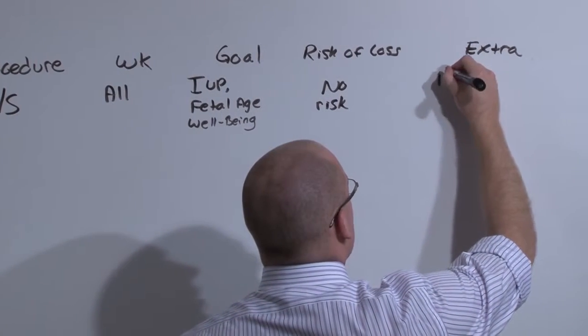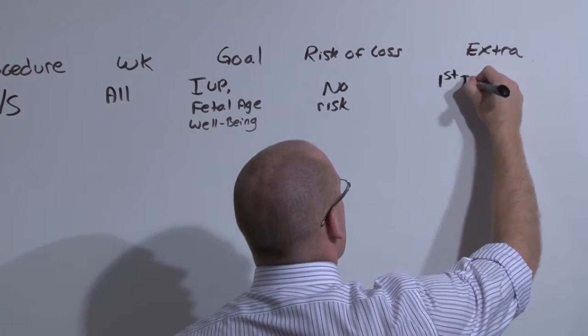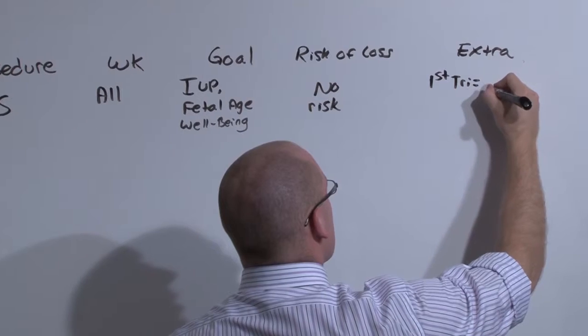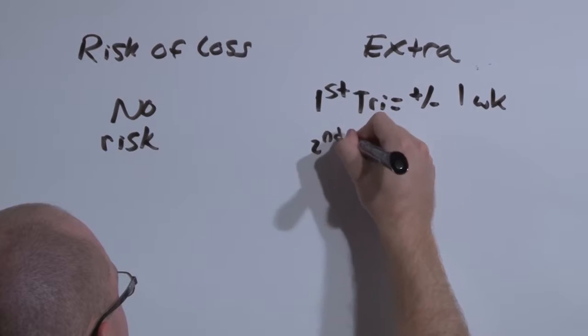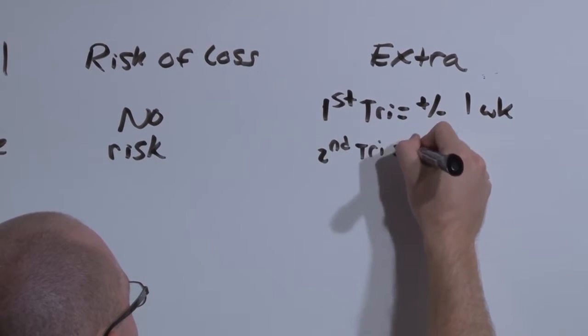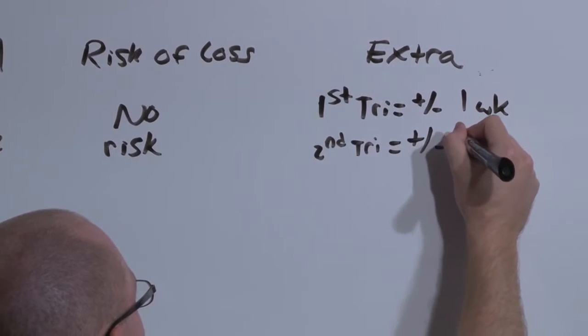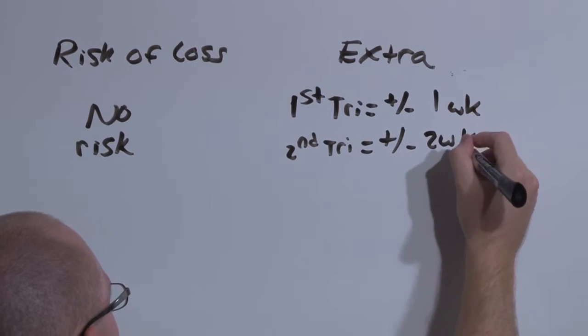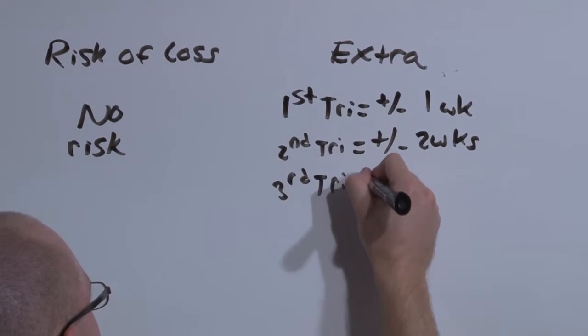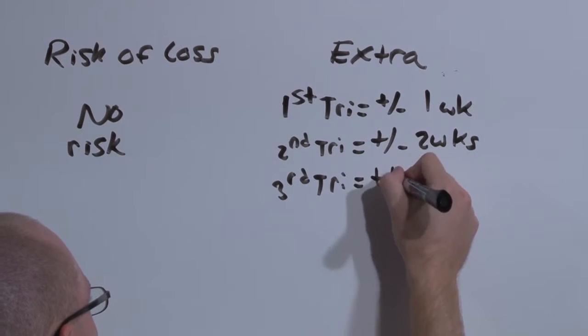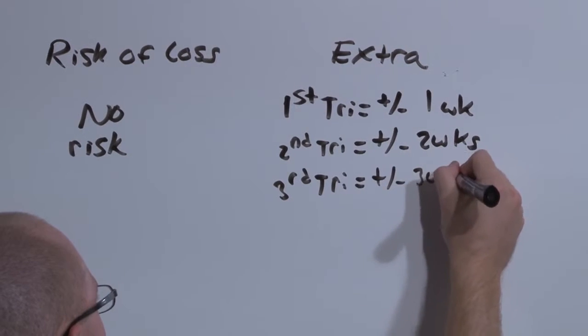Such that if you attempt to identify fetal age in the first trimester, you'll have gestational age plus or minus one week. If you assess for the first time a fetus in the second trimester, you'll have gestational age with an error margin of two weeks. And if you wait to the third trimester to assess, you'll have the gestational age with an error margin of plus or minus three weeks.